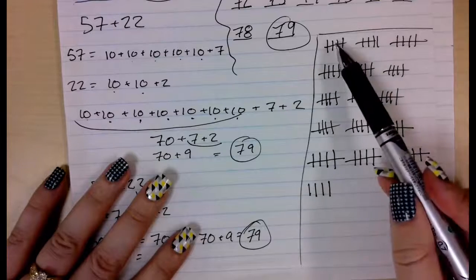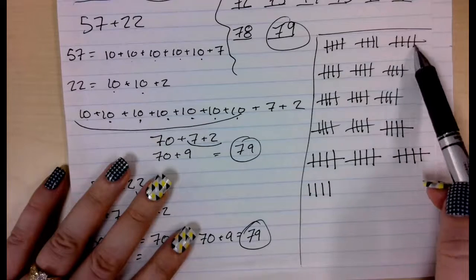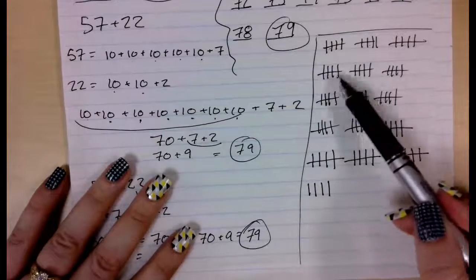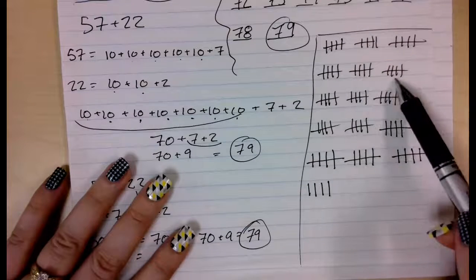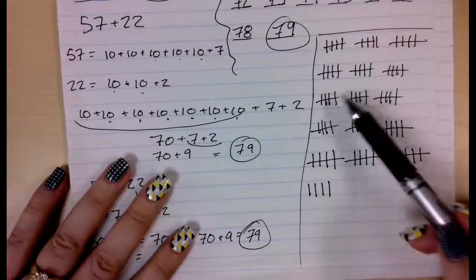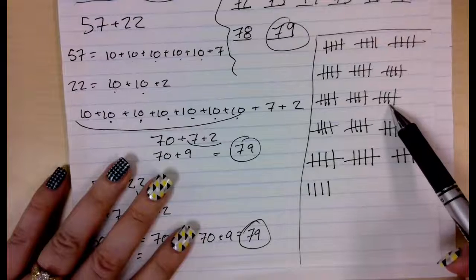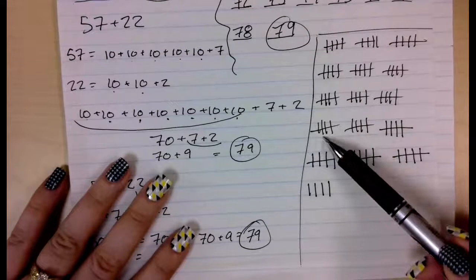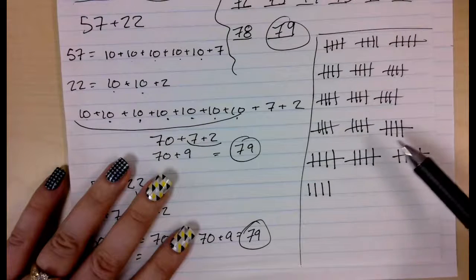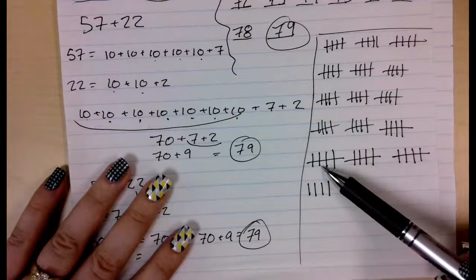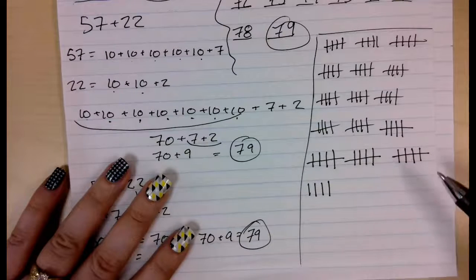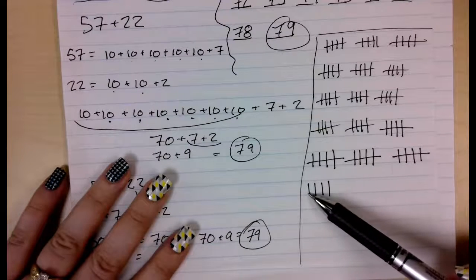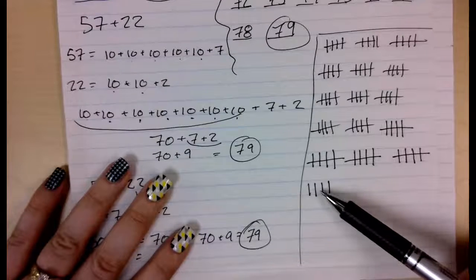If I count all of them, 5, 10, 15, 20, 25, 30, 35, 40, 45, 50, 55, 60, 65, 70, 75, 76, 77, 78, 79.